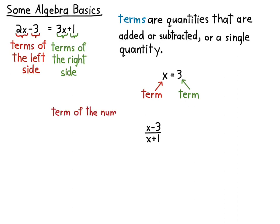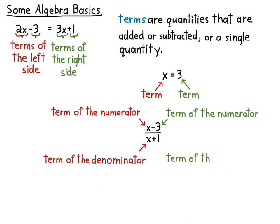Okay, let's look at x minus 3 over x plus 1. x is a term of the numerator of this fraction, as is negative 3. x is a term of the denominator of this expression, as is 1.